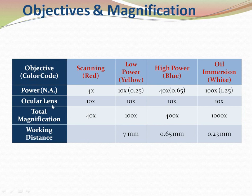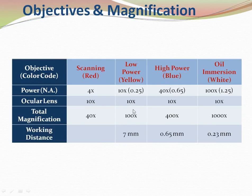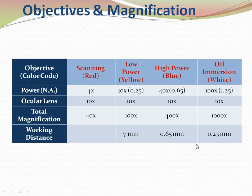Magnification power of different objectives: the screening objective is 4x; the ocular lens is 10x for all. Total magnification is objective multiplied by eyepiece: screening gives 40x, low power 10x objective gives 100x, high power 40x gives 400x, and oil immersion 100x gives 1000x. Working distance decreases as magnification increases. Knowing the working distance helps in focusing the specimen quickly and easily.